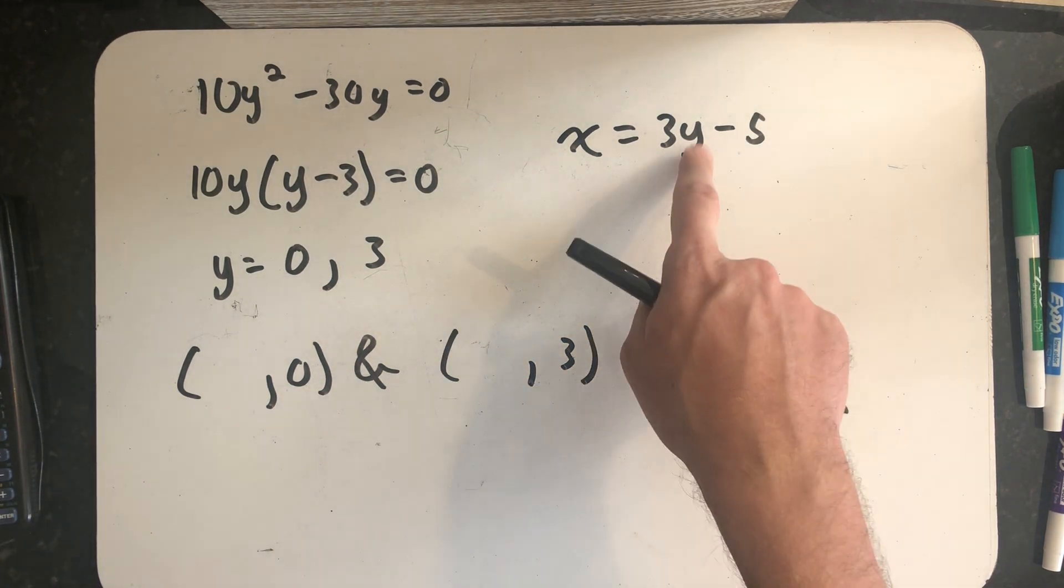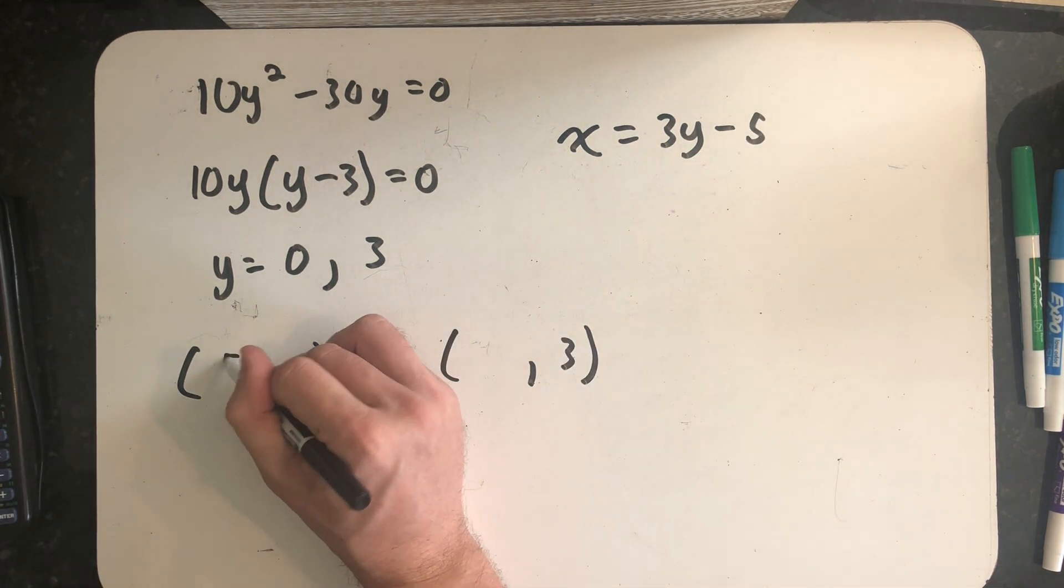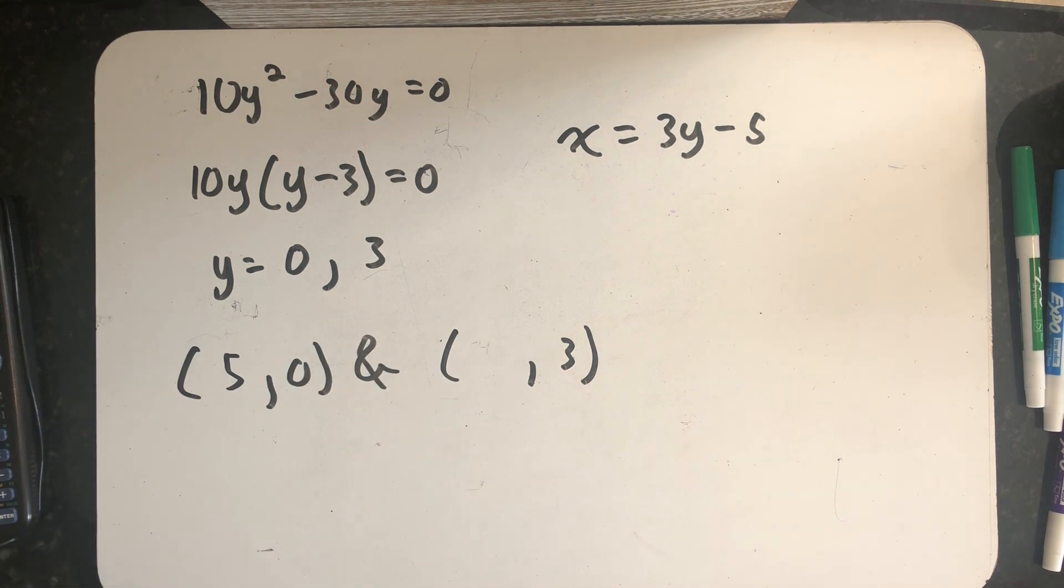Plugging in a 0 for y tells me that x is 5. So (5, 0) is one of my solutions.